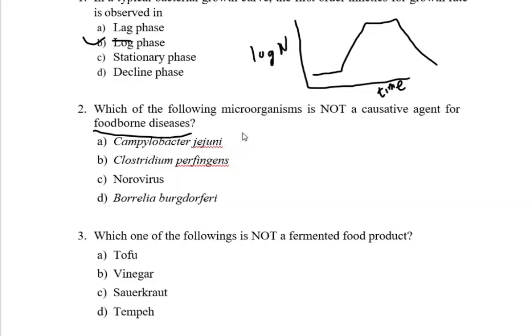Campylobacter jejuni, Clostridium perfringens, Norovirus—these all are responsible for foodborne disease. But only Borrelia burgdorferi is not responsible for foodborne diseases. It is responsible for Lyme disease. What is Lyme disease? Lyme disease is the most common vector-borne disease in the United States. So the right answer is option D.